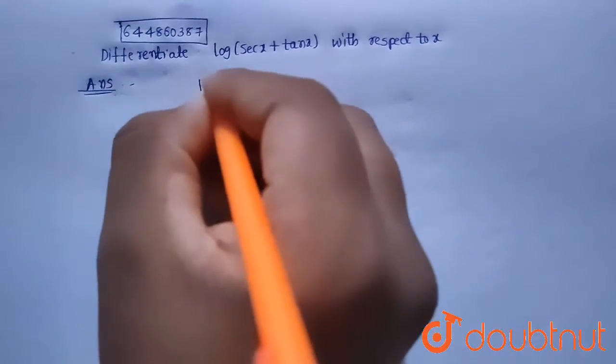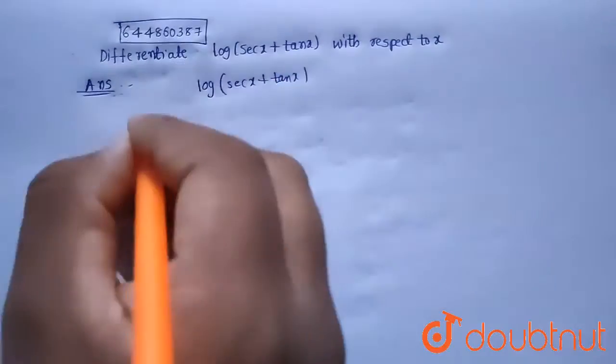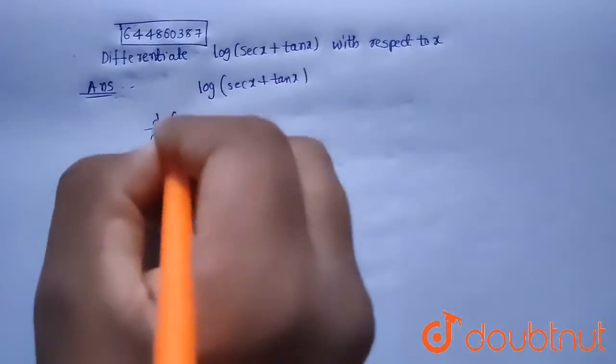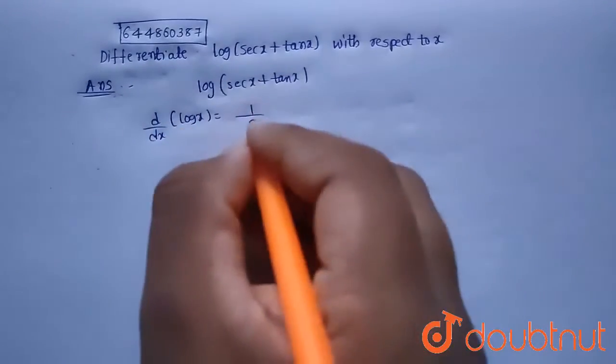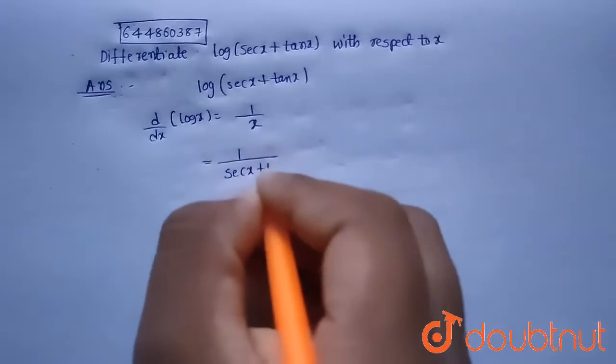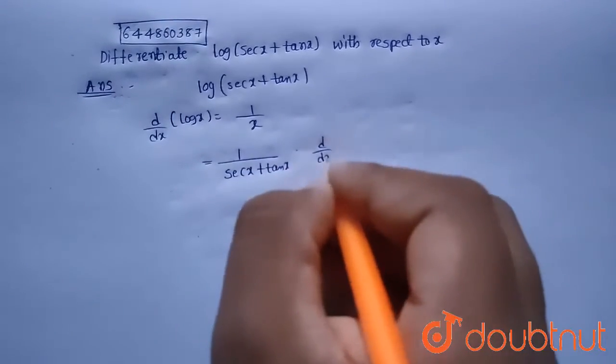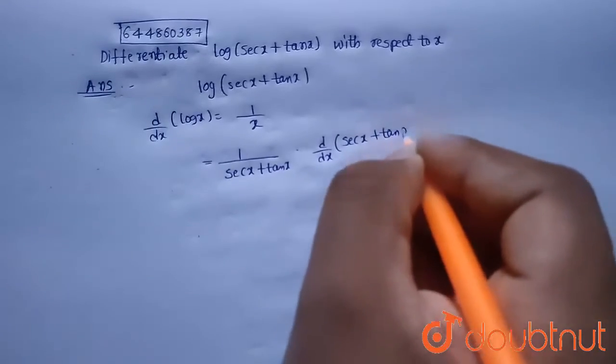So given function is log of secant x plus tan x, and we know that derivative of log x is nothing but 1 by x. So by using this, the differentiation of log of secant x plus tan x will be 1 by secant x plus tan x multiplied with derivative of secant x plus tan x, because secant x plus tan x is also a function in terms of x.